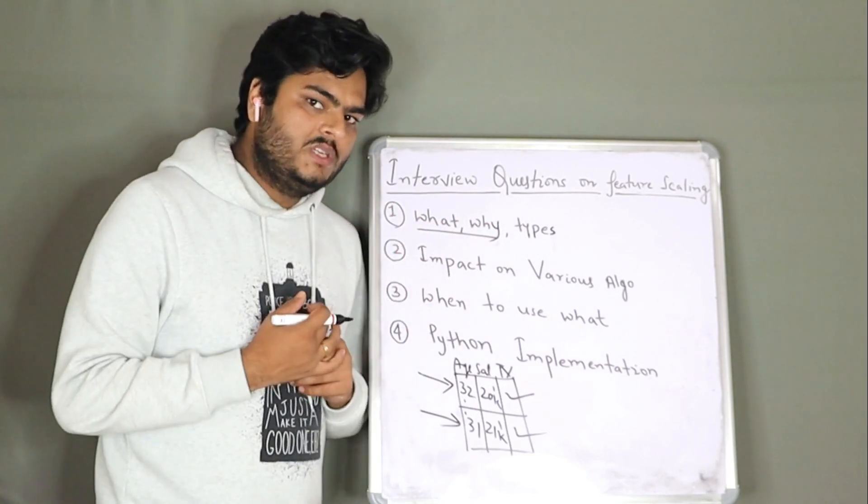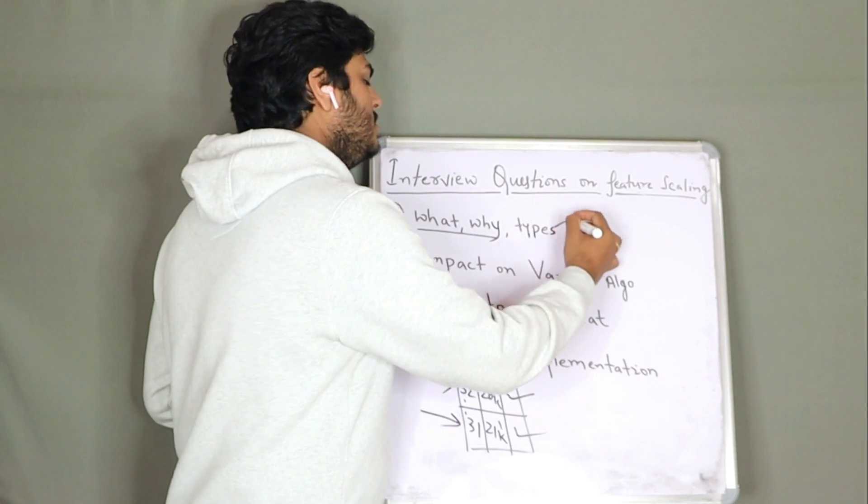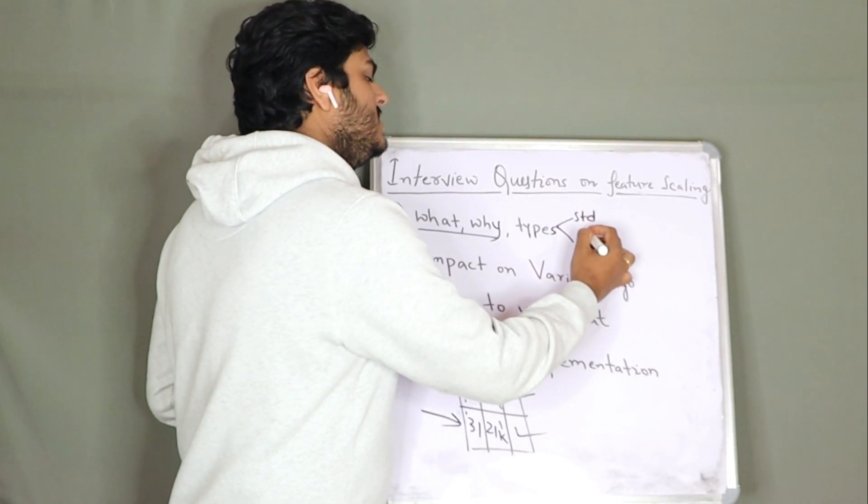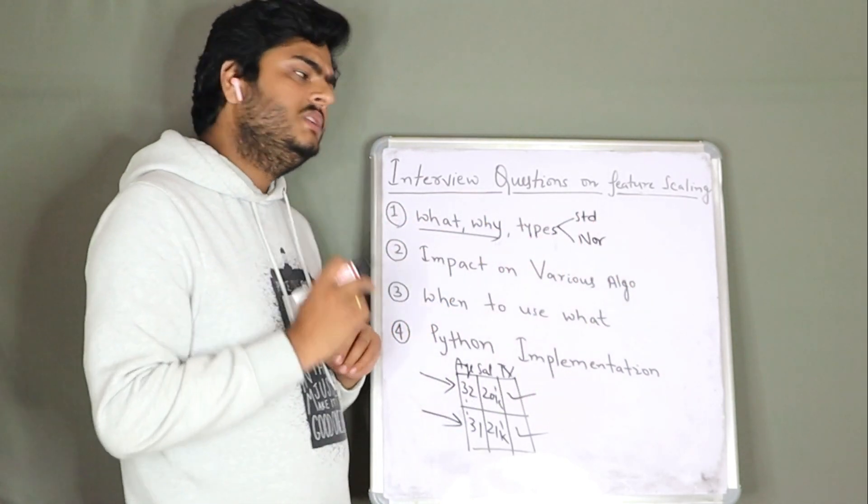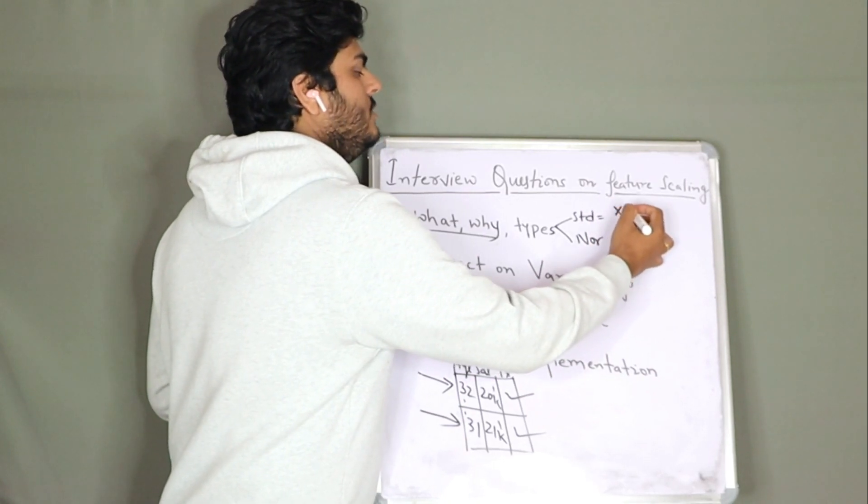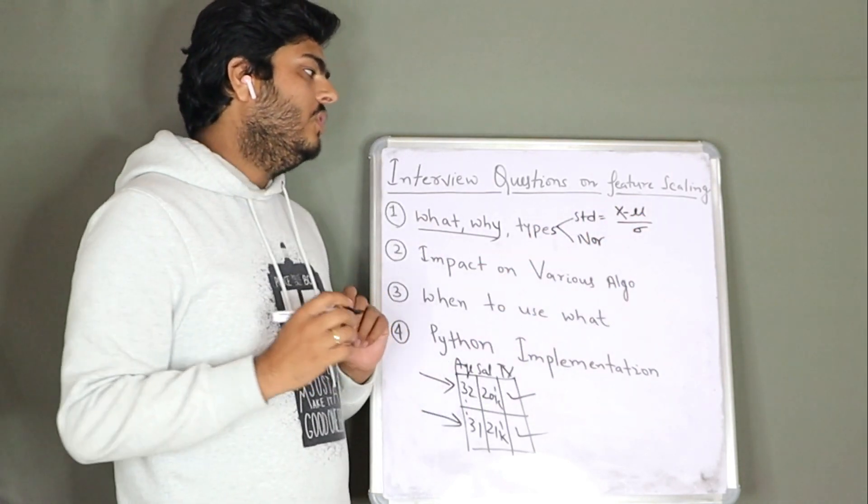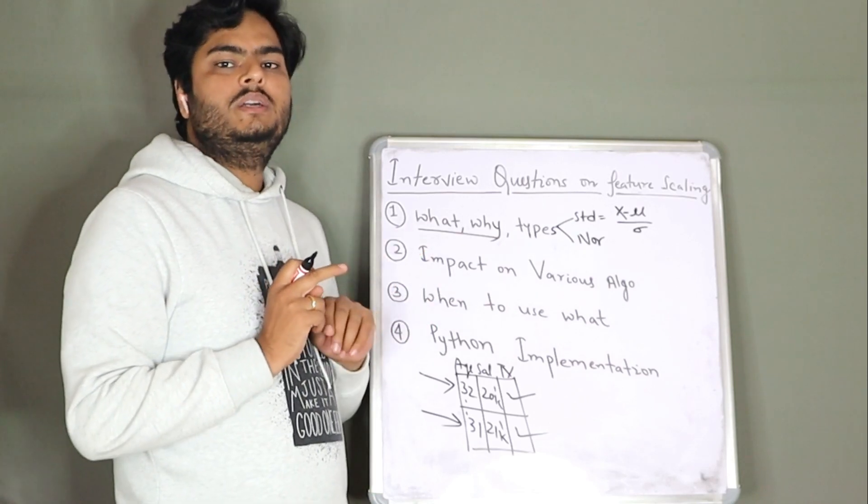Now, what are the types of feature scaling? Two most important types. I am sure you know this, but I am just writing here: standardization and one is called normalization. What is the formula for standardization? Standardization is computed like this. X is your value, mu is your mean and sigma is your standard deviation.